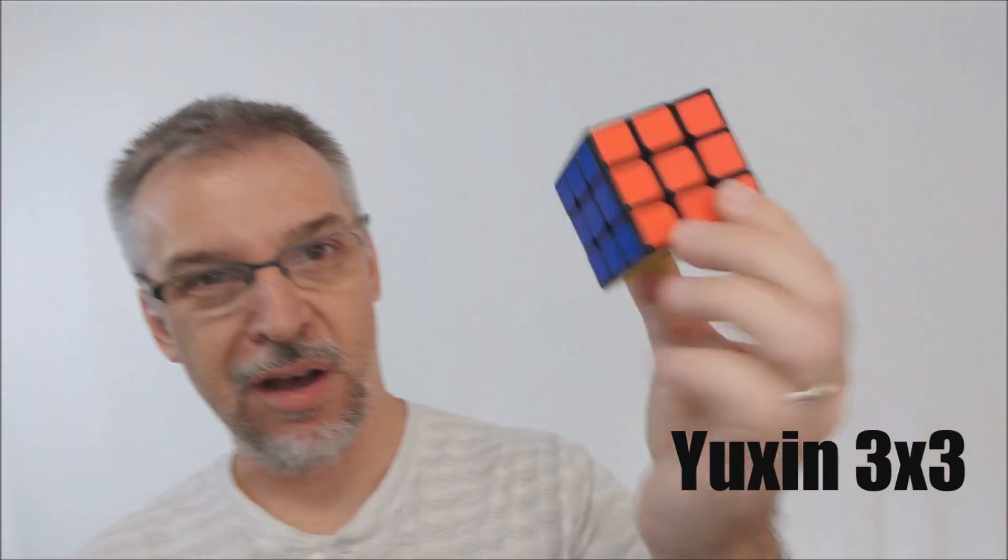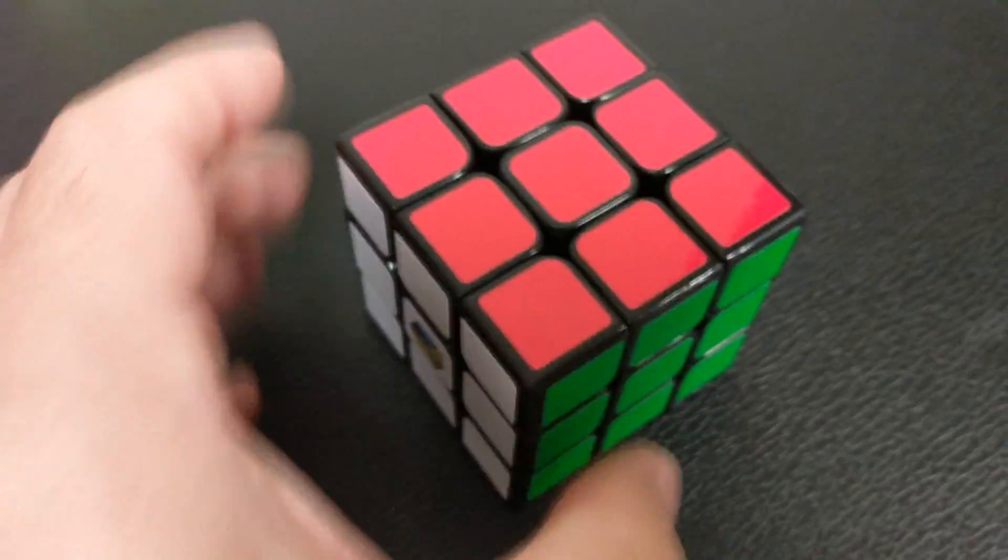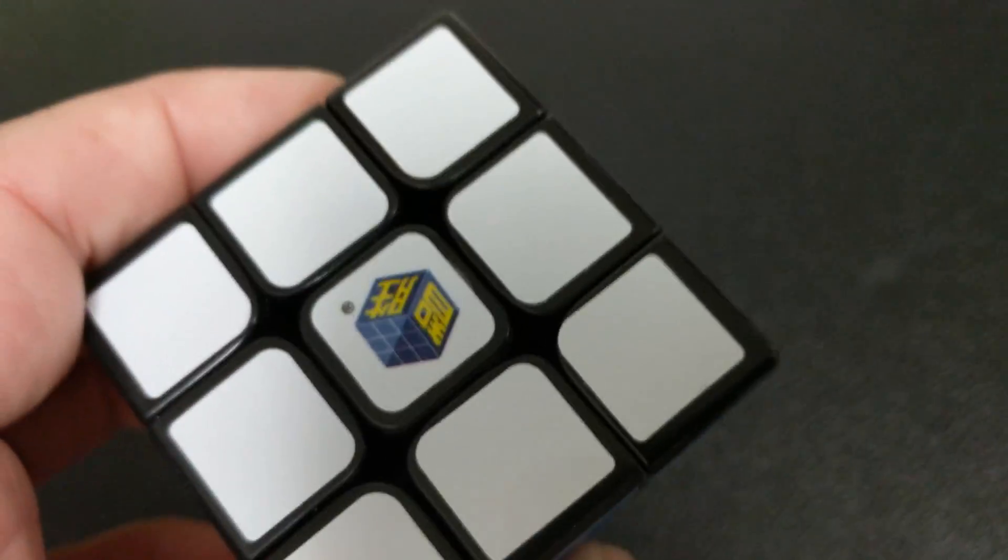And then lastly, this is my cube that I got off eBay. I think it's called the Yuxin 3x3. It was super duper cheap. Came from China. It's really loud. You can hear it from here. And it's not as loose as the cube 3. But it's really squeaky too. Like you can hear all the springs inside of it. So those are just a few that I brought as an example.